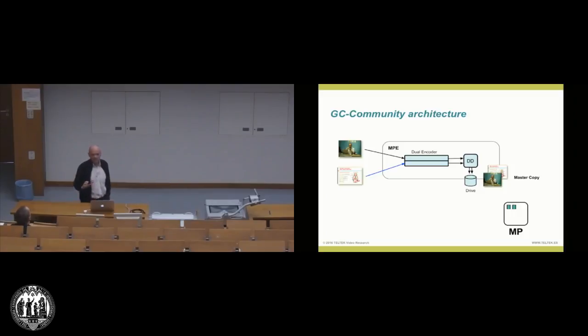Just as a reference, this is the internal architecture of the Galicaster community capture agent. We have a media processing engine, a dual stream media processing engine. We have the professor camera and the frame grabber from the VGA coming inside. Both videos are encoded, and then a dual stream distribution engine just throws it to the drive, and then afterwards it will be ingested.